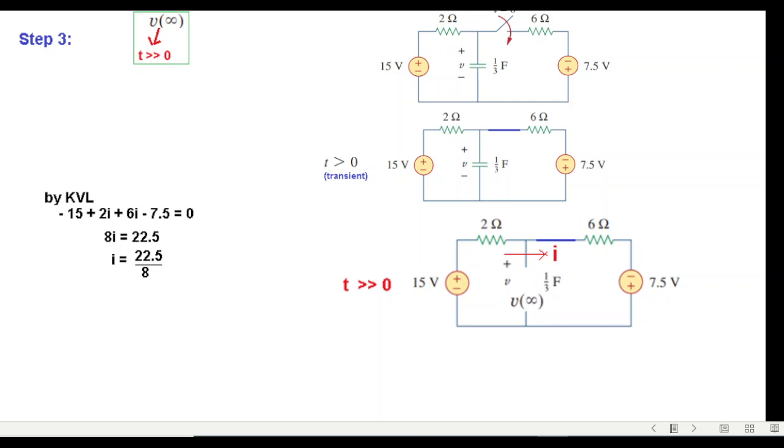Taking the i value and calculating v(∞), we get 9.375. So all three parameters are calculated.